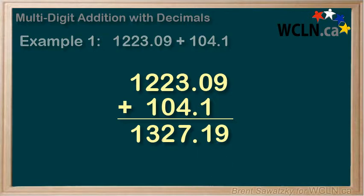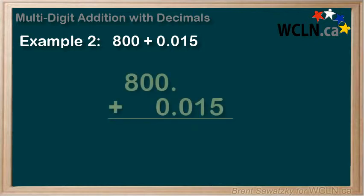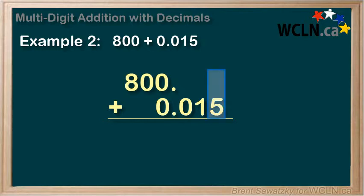Let's try another. Example 2. Remember, some people find adding nothing really bothersome, and so in all these empty spaces you could put zeros, but it's not necessary. We're going to go ahead without the zeros.